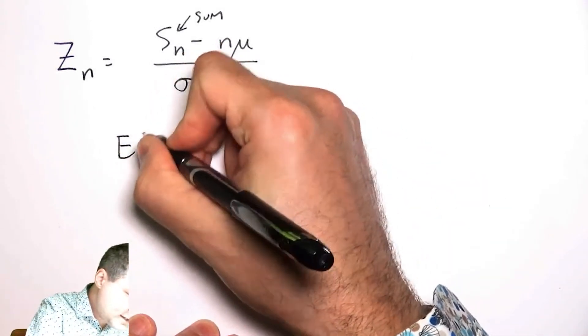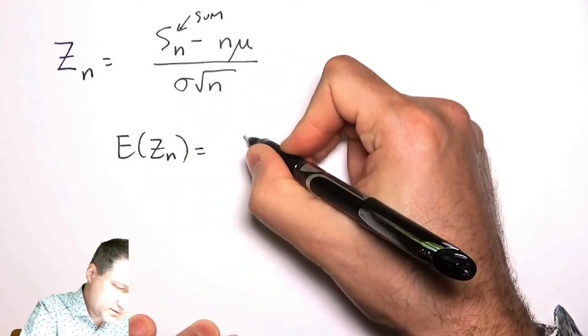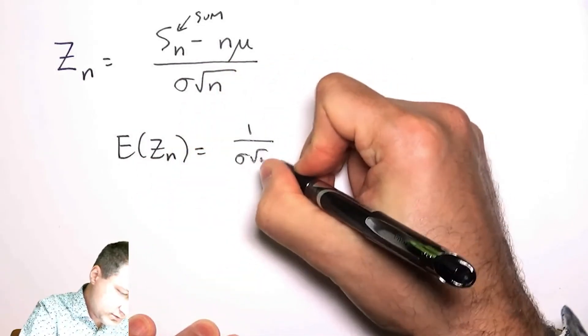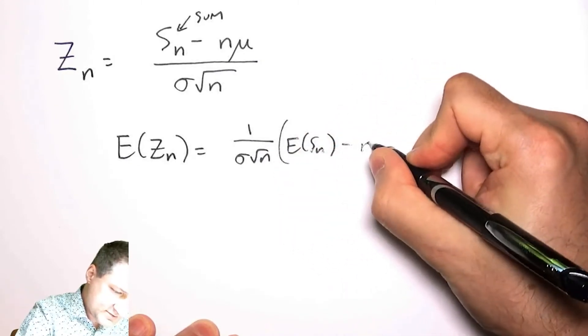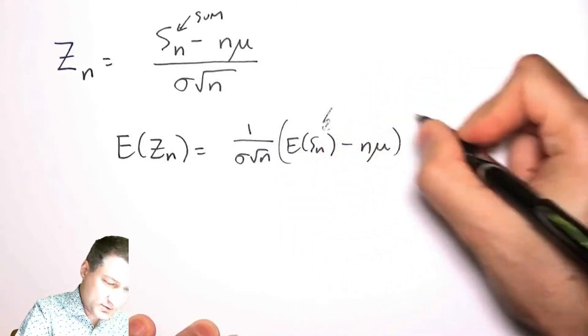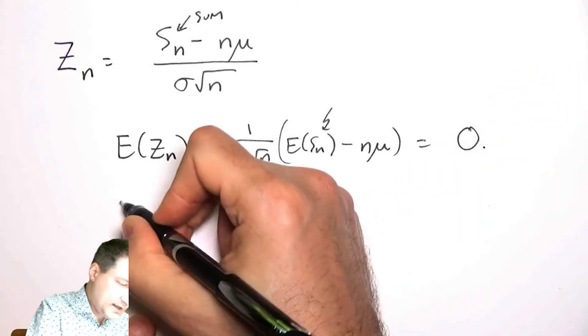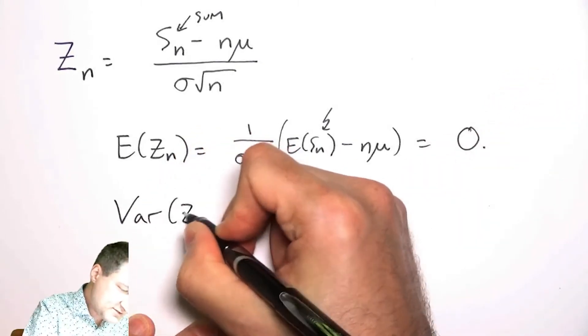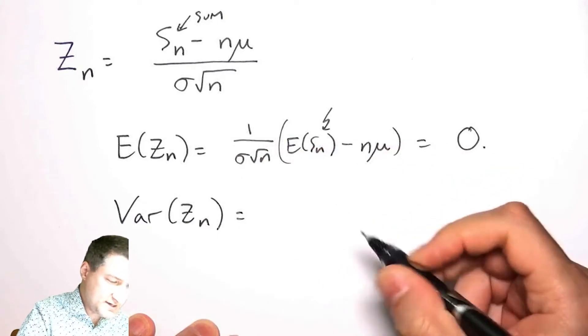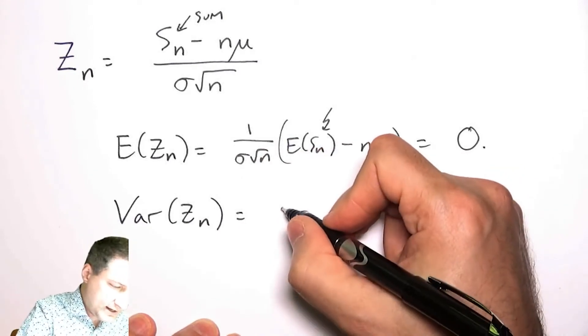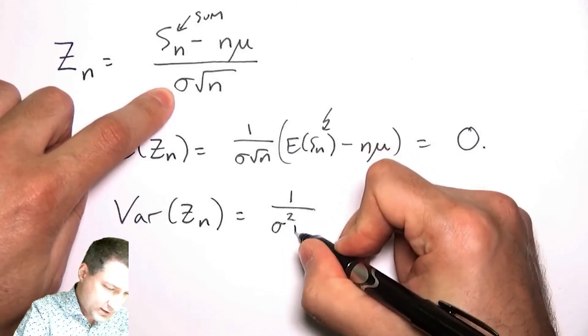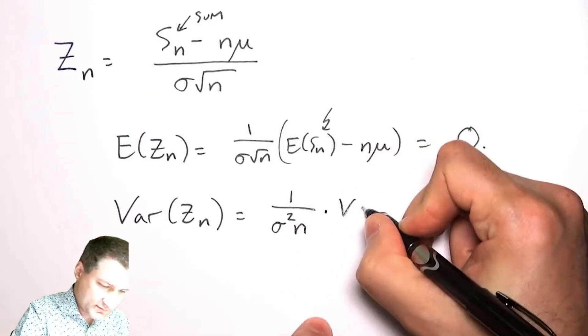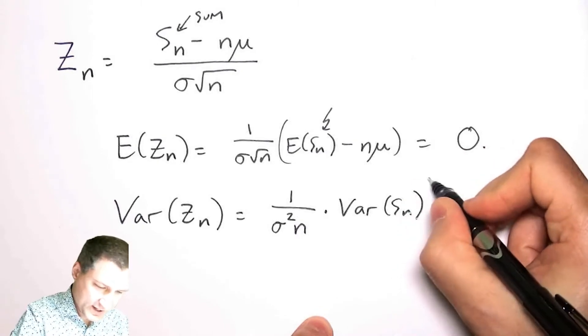I can see that the expected value is going to be the expected value of the sum minus n mu, and this is n mu, so it's going to be zero.